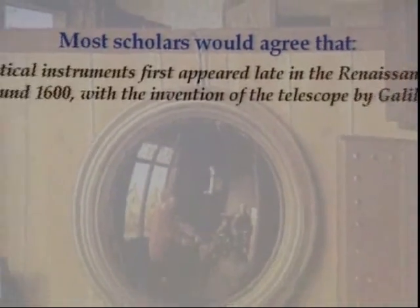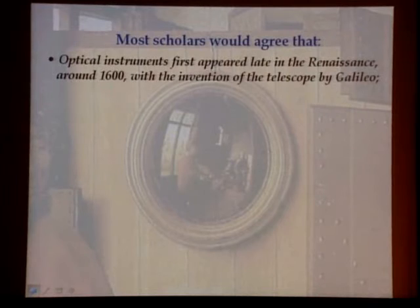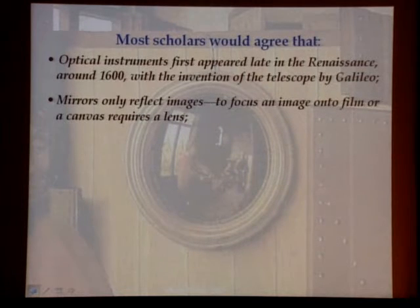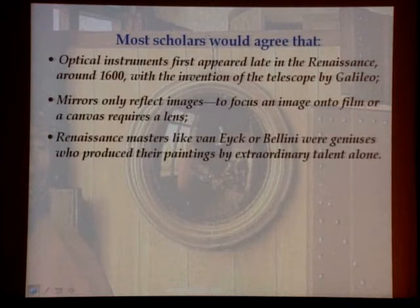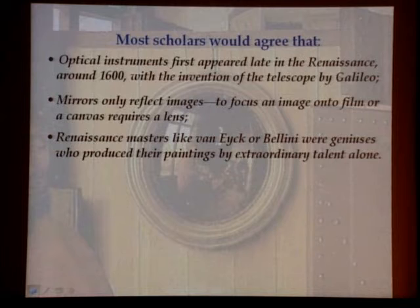If, at the end, I've convinced you that Jan van Eyck used a lens, you have to be pretty passionate to picket against that, to denounce people for that. Most scholars would agree that optical instruments first appeared late in the Renaissance with the invention of the telescope by Galileo — or technically, a Dutchman around 1598 to 1600. If you want to project an image, you need a lens; mirrors only reflect images. Van Eyck, Bellini — these Renaissance masters were considered to have worked by sheer genius alone. If what I'm going to show you this afternoon is true, all of these statements are false — not on a technicality, but fundamentally false.